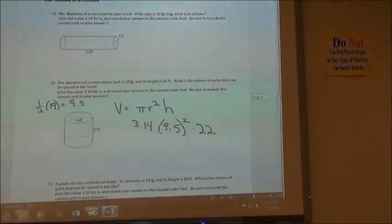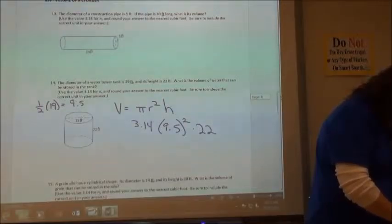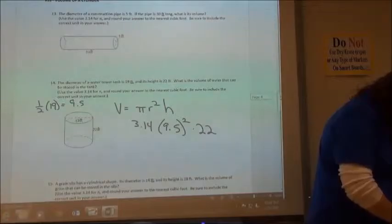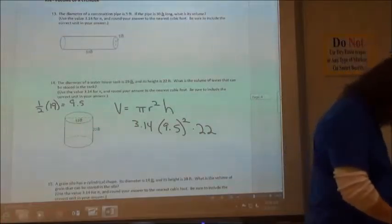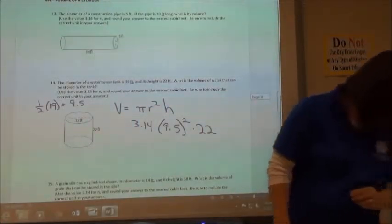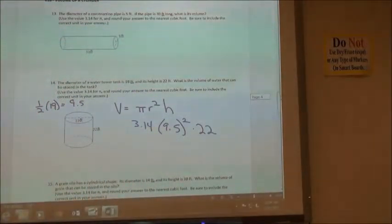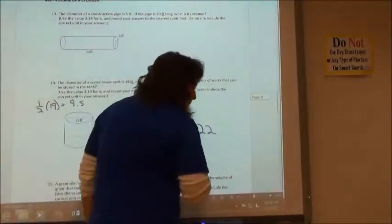And again on your calculator, you can either use the parentheses or just use the times sign, then you don't need the parentheses. You just put the times sign in between each of those. Then you come up with 6234.47.